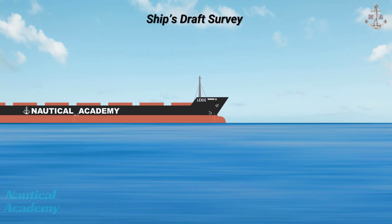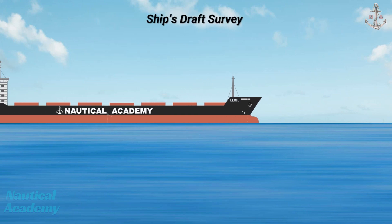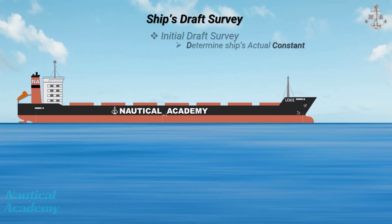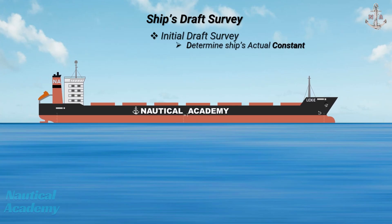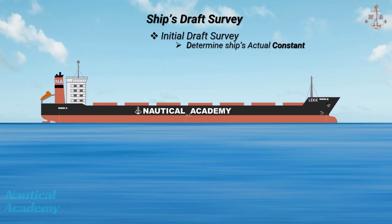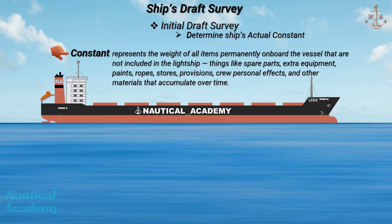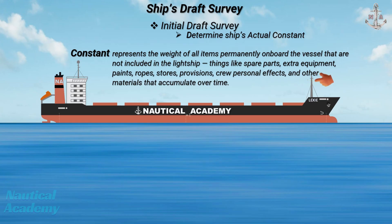In a draft survey, one of the most important values we determine during the initial draft survey is the ship's actual constant. Ship's constant represents the weight of all items permanently onboard the vessel that are not included in the lightship — things like spare parts, extra equipment, paints, ropes, stores, provisions, crew personal effects, and other materials that accumulate over time.